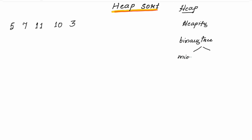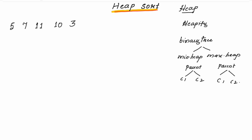You will be coming across two terms: min heap and max heap. In min heap, the parent node always has a value lesser than the children nodes. In max heap, the parent node has a value greater than the children nodes. All the details will become clear once I explain the process with an example.